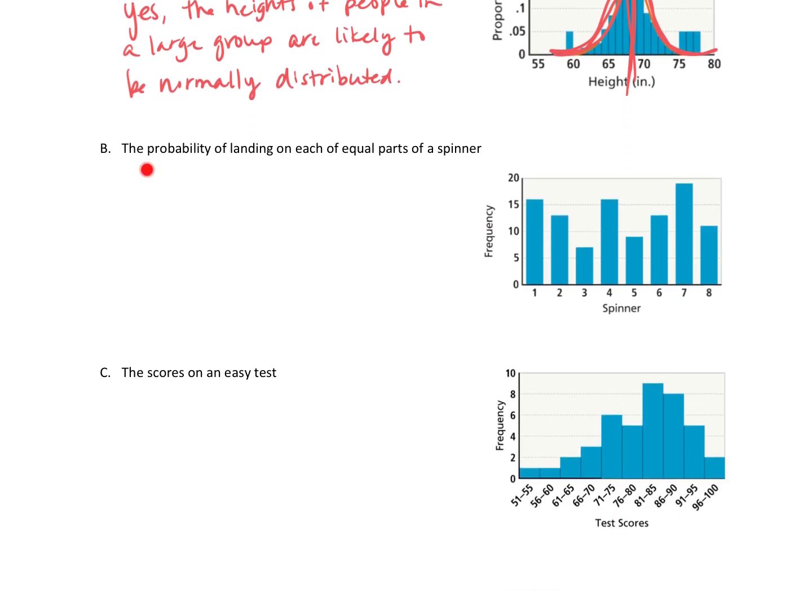All right, part B: the probability of landing on each of equal parts of a spinner. So if you take a look at the histogram, we can see this is not a bell-shaped curve. It maybe looks symmetric, maybe the left side mirrors the right side here. But it definitely does not have the bell-shaped curve.